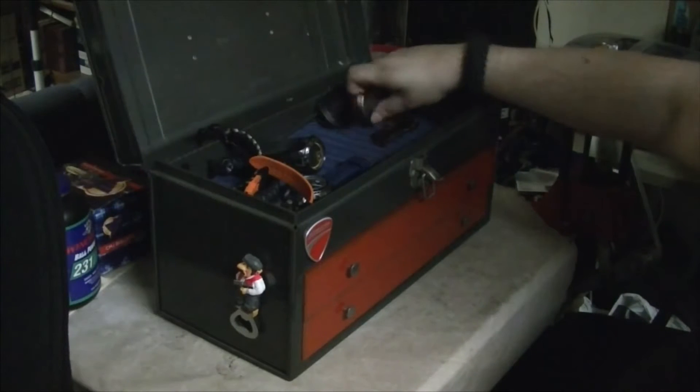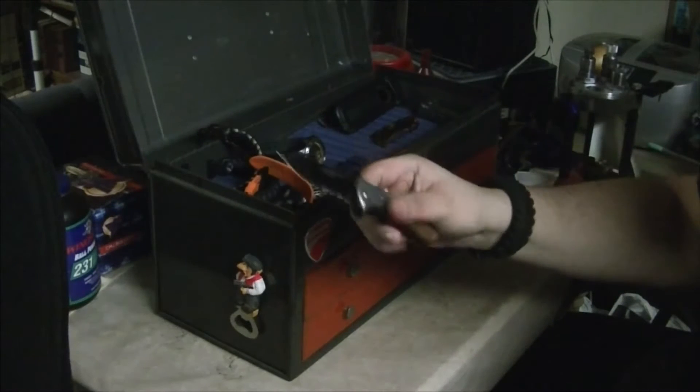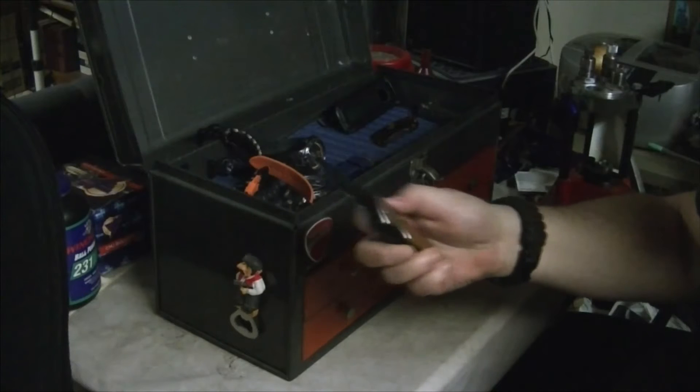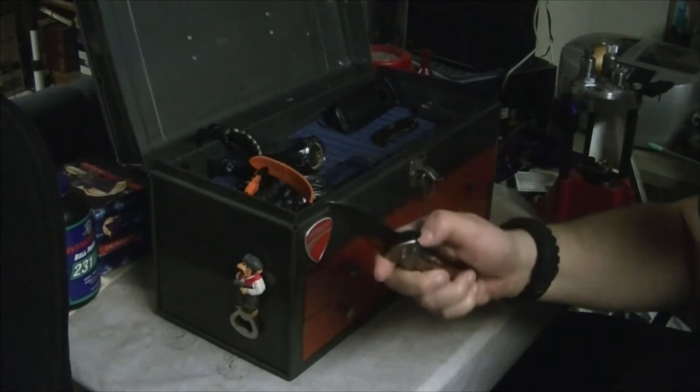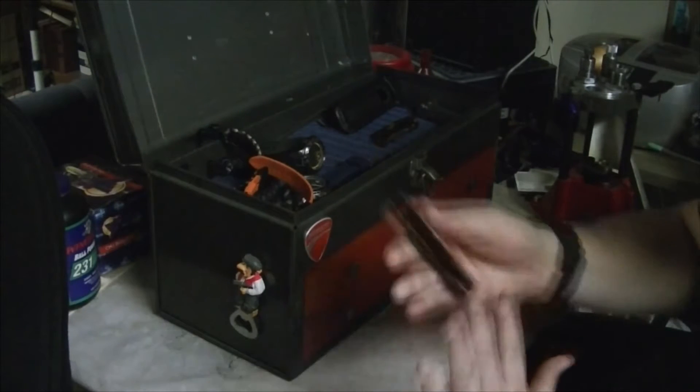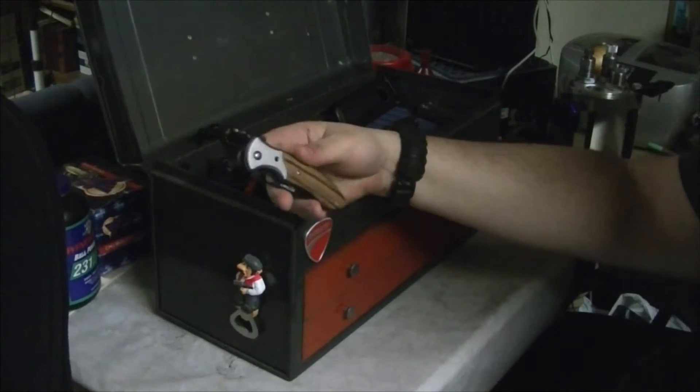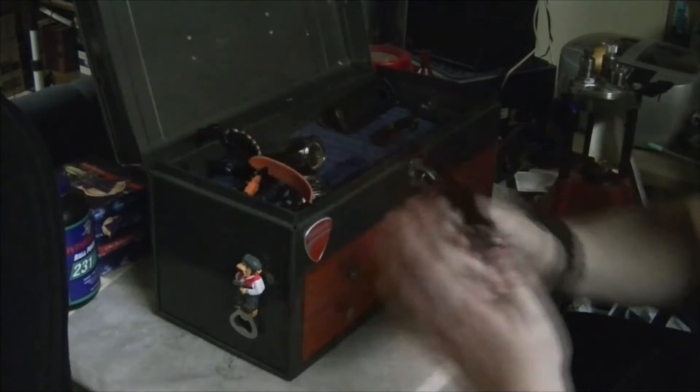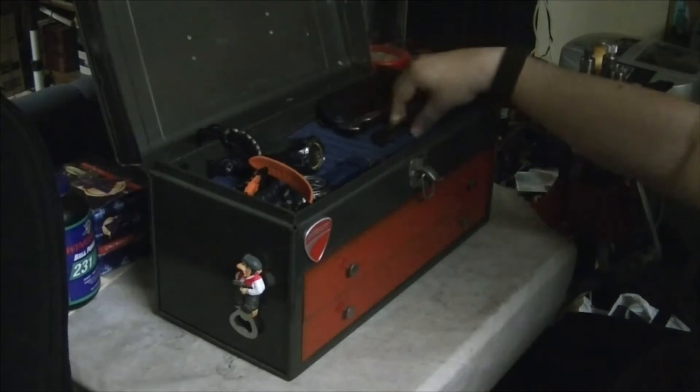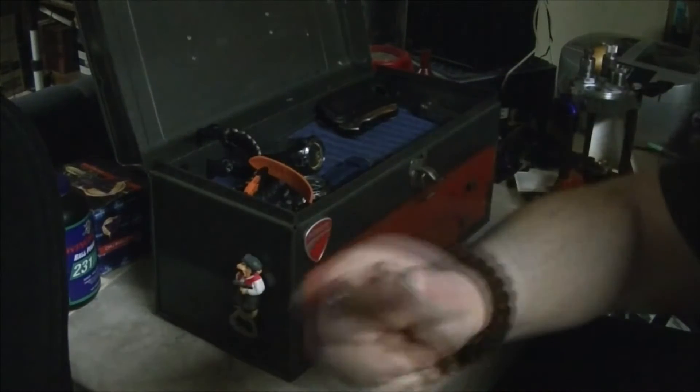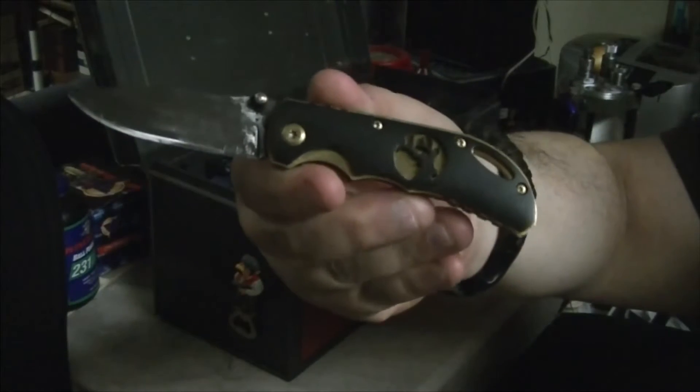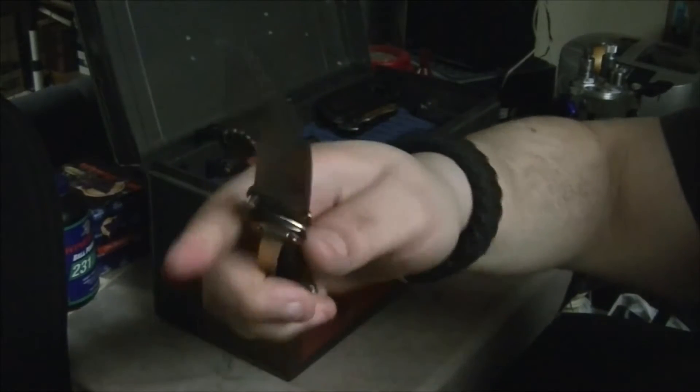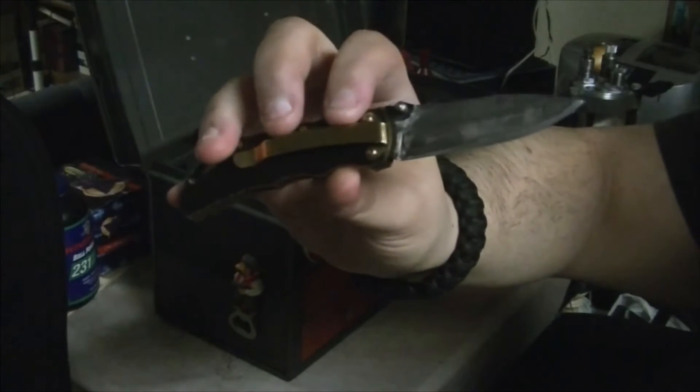Up here I keep some cheap knives. This is an eBay Defender Extreme - I got it a long time ago for five bucks, it's kind of crap but it's spring assisted. There's another cheap one off eBay, black and gold. The blade was black, I stonewashed it to see if I liked it.